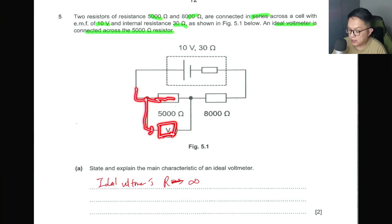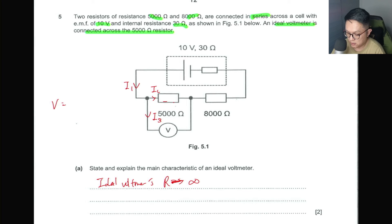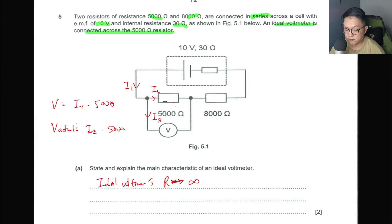An ideal voltmeter's resistance should tend to infinity. If you have a very large resistance here, when current reaches this point, very little current will actually go through the voltmeter — effectively all current goes through the resistor instead. Current takes the path of least resistance, so if the voltmeter resistance is very large, essentially all current flows through the measured resistor. This ensures the voltmeter reads the correct voltage V = I × 5000, rather than a reduced value caused by current diversion.